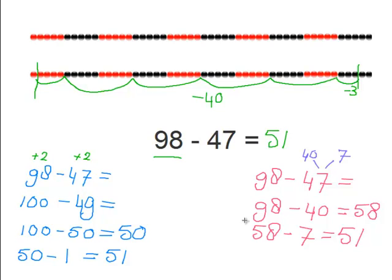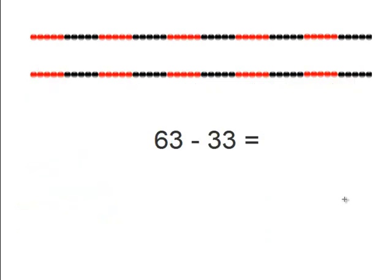So remember, you can solve these problems in many ways and choose the way which you think is easiest. So let's go ahead and try another problem: sixty-three minus thirty-three. First we'll solve this problem with the help of the string of beads. So we need to find sixty-three. Since we know the first string of beads is fifty, we need ten and three more. So sixty-three.